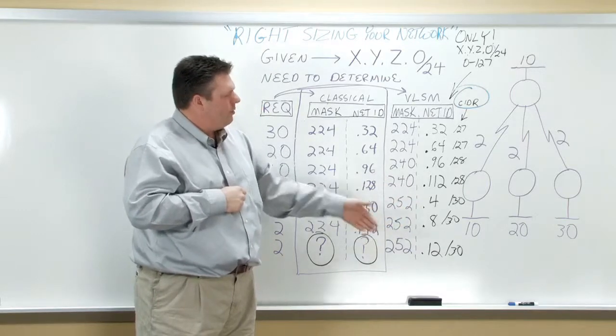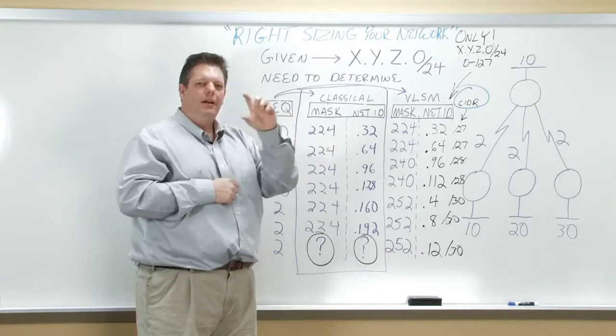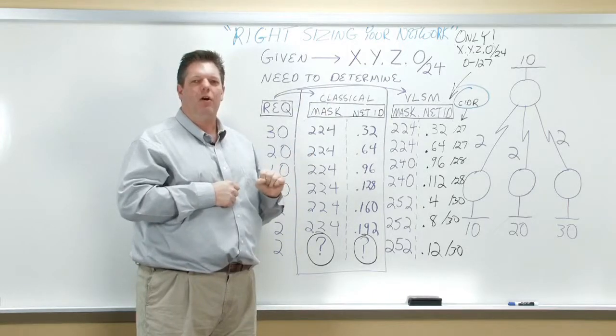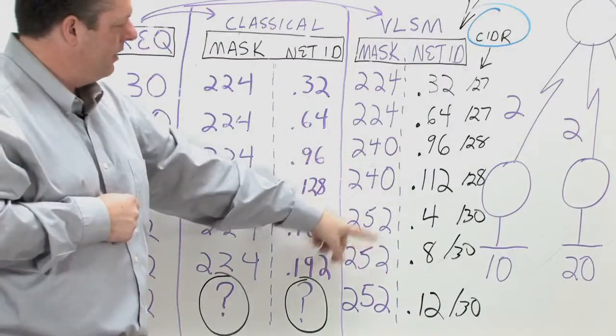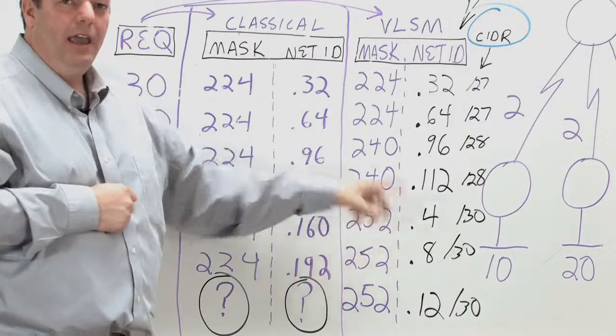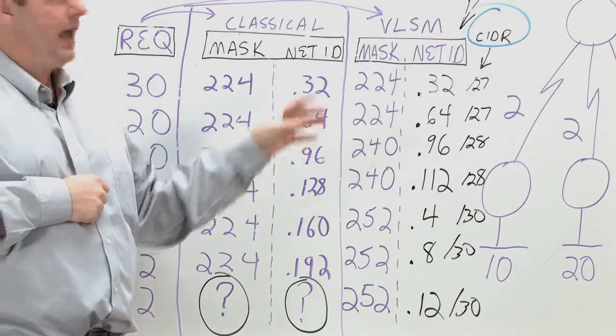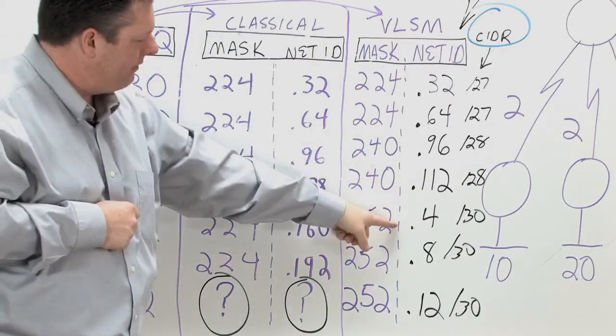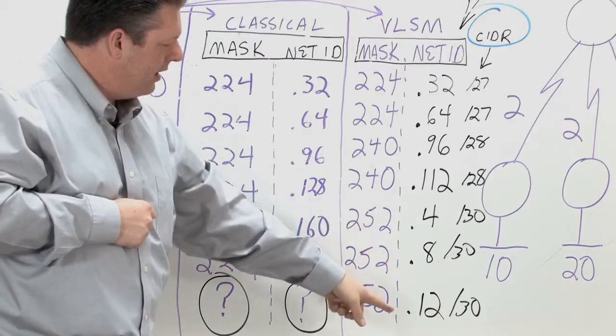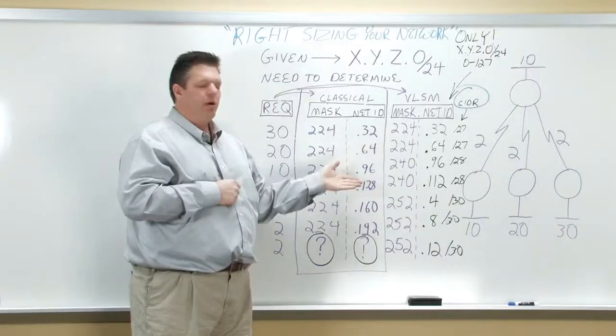I don't need to keep going because it's VLSM, so I can go and I can pick those pieces out as long as they're not overlapping with other sections. So I've actually gone back and I'm backfilling the address space that I have. So I'm using dot 4, dot 8, and dot 12. So I've just solved this problem.